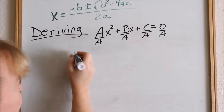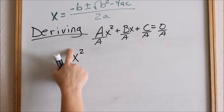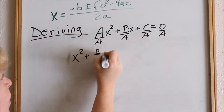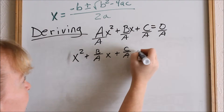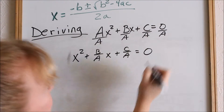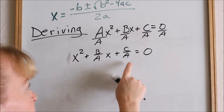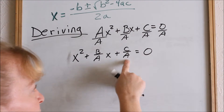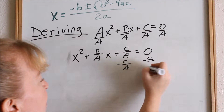A divided by a is just x squared. So we have x squared plus b over a times x plus c over a equals 0 — because 0 divided by anything is still just 0. Now, the first thing we wanted to do was to get rid of the constant and move it to the other side, so I'm going to subtract c over a from both sides.